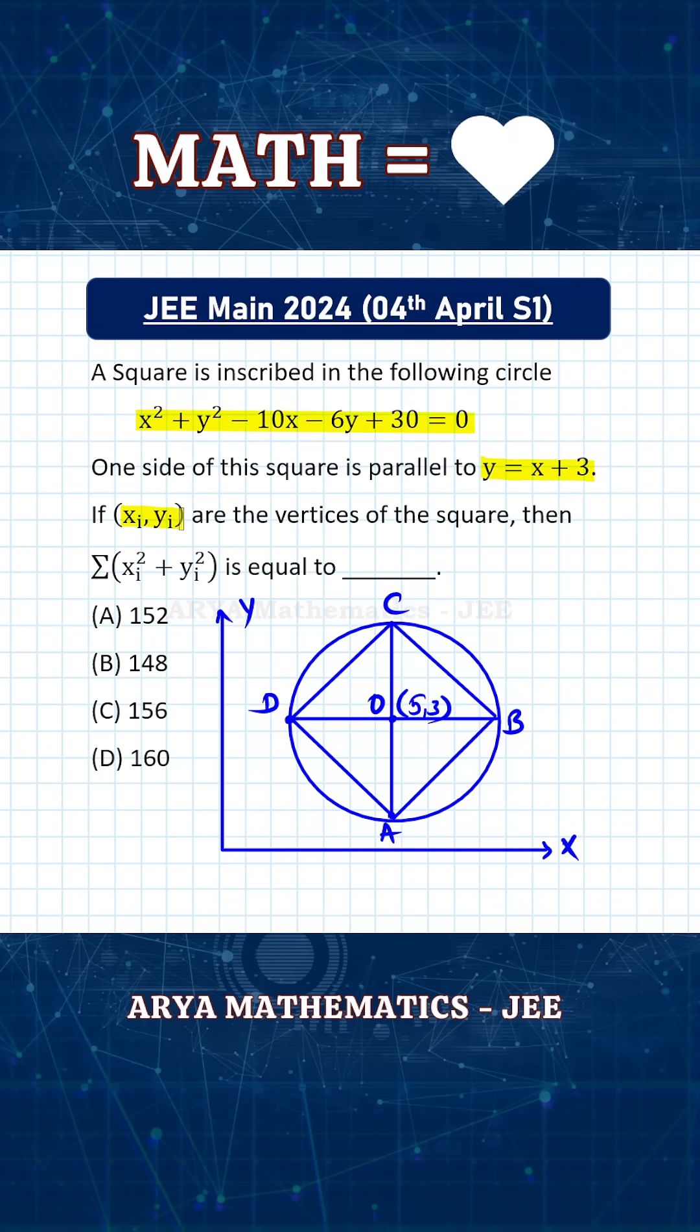If (x_i, y_i) are the vertices of the square, then we need to find Σ(x_i² + y_i²).